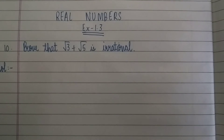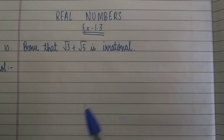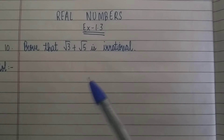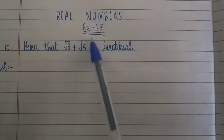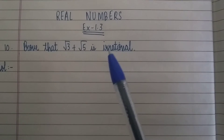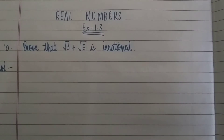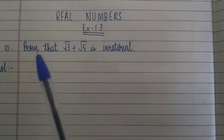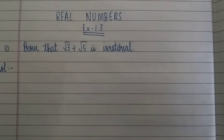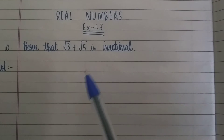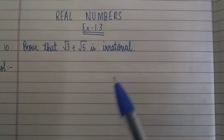Hey guys, welcome to my channel StudyJunction. In today's video I am going to ask you from NCERT Exemplar exercise 1.3, which has three-mark questions. The important question I am going to cover is question 10: prove that √3 + √5 is irrational.